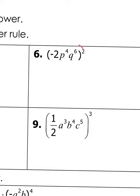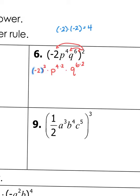Let's do number six together. I'm going to have to do negative two squared, then p to the fourth squared — power times another power means multiply — times q, and then six times two. You have to distribute that power of two into everything. Be really careful: if you don't use parentheses when squaring something negative, your calculator will give you the wrong answer. Negative two times negative two is positive four. Negative two squared is positive four. Then four times two gives p to the eighth power, and six times two gives q to the twelfth power.